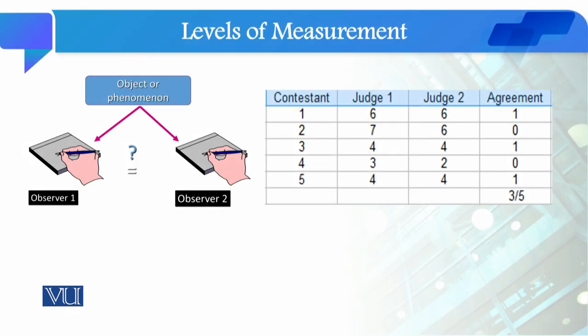This is what happens when you have a phenomenon that you are measuring — you have different observers who can observe some objects and phenomena, as you can see here. The observers give points on that phenomenon. For example, if there is a performance and there are five contestants, they give a score of 0 to 10.